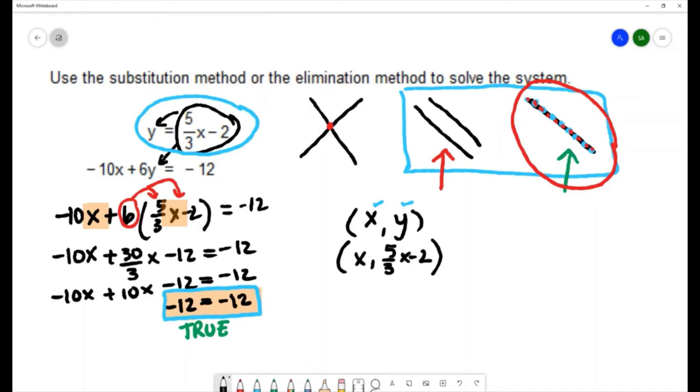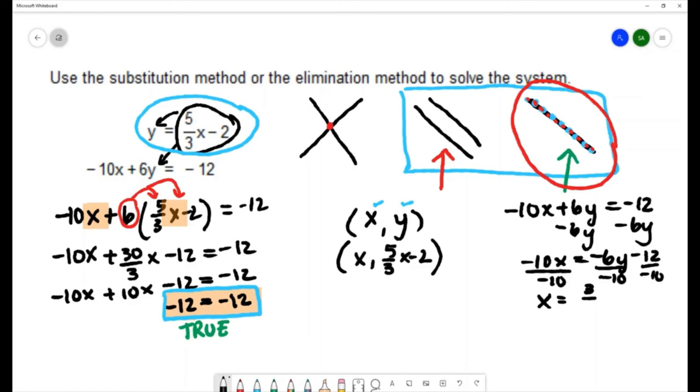Now you could also do this in terms of y as well but I would need to rearrange one of these equations to solve for x. So if I wanted to do that I would take the equation negative 10x plus 6y equals negative 12. Solve for x. I would subtract 6y. That's negative 10x equals negative 6y minus 12. Divide by negative 10. To get x equals I'll reduce that 6 over 10. Both of them are even so that becomes 3 over 5y.